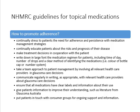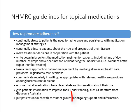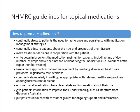Communicate regularly in writing with relevant healthcare providers about glaucoma care decisions, including appropriate referrals and letters to the patient's GP. Make sure medications have clear labels and information about their use, which usually comes from pharmacy. It's important to give patients information to help them understand their condition — Glaucoma Australia has many resources available, and you can actively put patients in touch with relevant consumer and support groups.